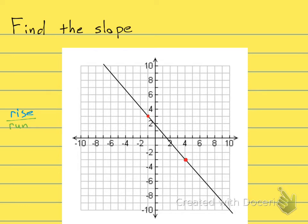If I look at my rise, I'll start at this point on the right. If I look at my rise, how far do I rise? 1, 2, 3, 4, 5, 6, my rise is 6.